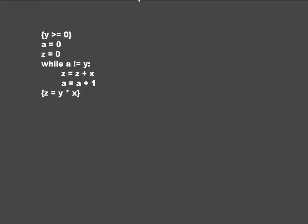So the question is looking at this code, we start with the precondition y is greater than or equal to 0, we need to end up with the postcondition z is equal to y times x, and we've got this little algorithm here.